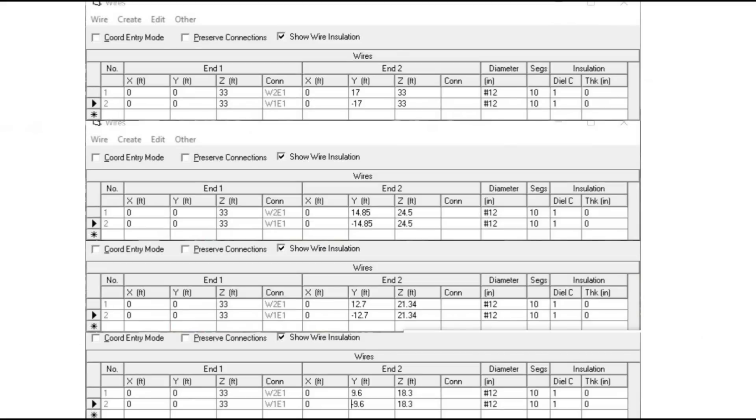So here are the inputs that I put into the EZNEC 6-plus software, which I paid for a long time ago. It's available for free now. These are the cases of the pure dipole, the length of each section, 17 feet on each side, to get decent SWR. And then, as you can see, we pull those ends down quite a bit.